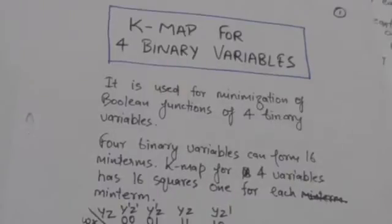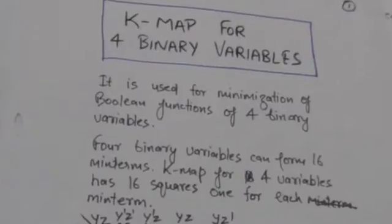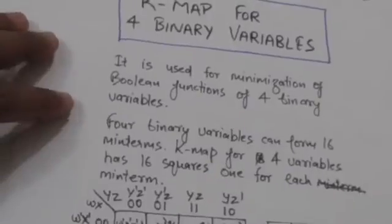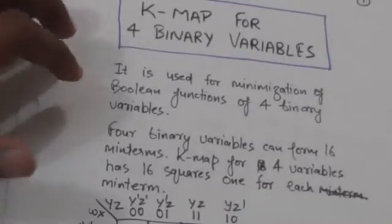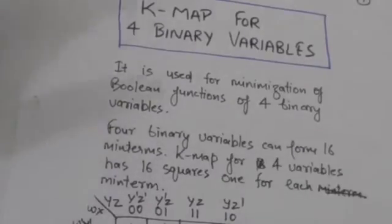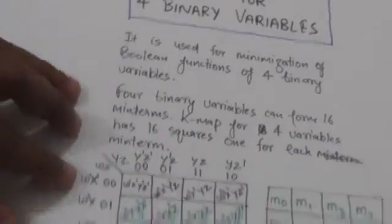Hello friends, welcome back. In this tutorial we will study about K-map for four binary variables. K-map for four binary variables is used for minimization of boolean functions of four binary variables. We know that four binary variables can form 16 minterms, so the K-map for four variables has 16 squares, one for each minterm.